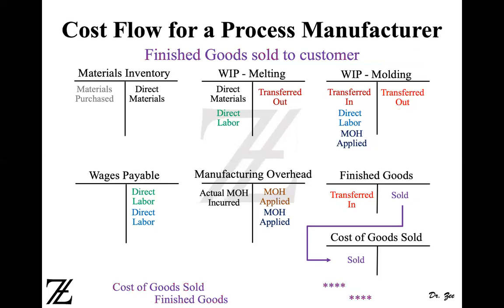The last entry is finished goods sold to customers. The journal entry is the same as in job order costing. Once you sell the product, it moves from finished goods inventory to cost of goods sold, which is an expense account. Since the expense is increasing, you debit cost of goods sold and credit finished goods inventory. So the flow is the same.